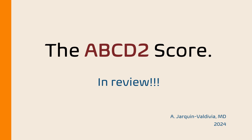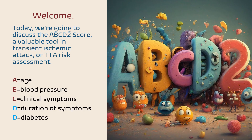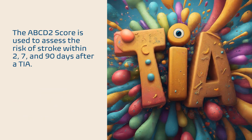Welcome. Today we're going to discuss the ABCD2 score, a valuable tool in transient ischemic attack, or TIA, risk assessment. The ABCD2 score is used to assess the risk of stroke within 2, 7, and 90 days after a TIA.